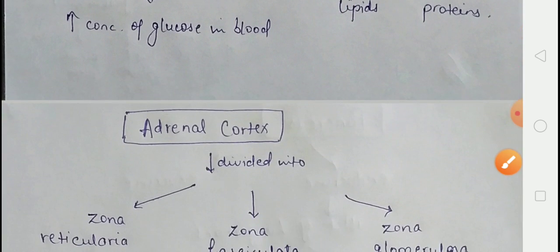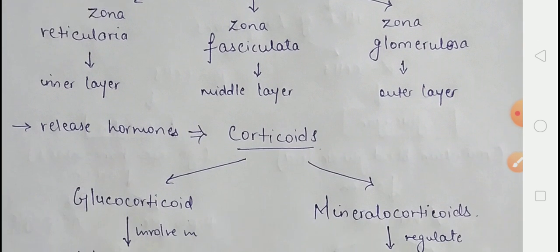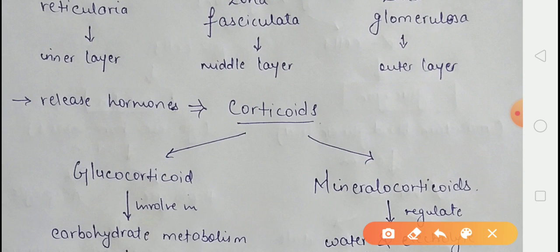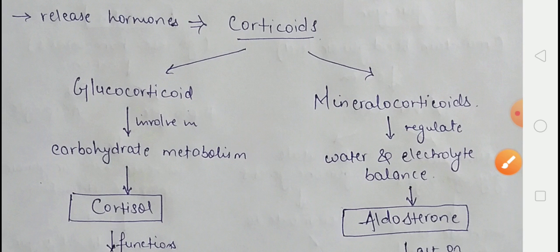The adrenal cortex is basically divided into three zones. The inner layer is called zona reticularis, the middle layer is zona fasciculata, and the outermost layer is zona glomerulosa. The adrenal cortex secretes hormones called corticoids, which are of two types: glucocorticoids and mineralocorticoids.